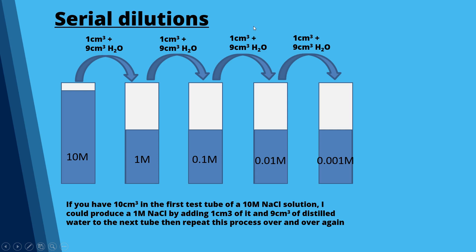Serial dilutions are an area students sometimes avoid, but they're straightforward once explained clearly. If we take a 10 molar sodium chloride solution and take 1 cm³ out and add it to 9 cm³ of water, we've diluted it by a factor of 10 — it's now 1 molar. We repeat: 1 cm³ of the 1 molar into 9 cm³ of water gives 0.1 molar; then 0.1 molar gives 0.01 molar.